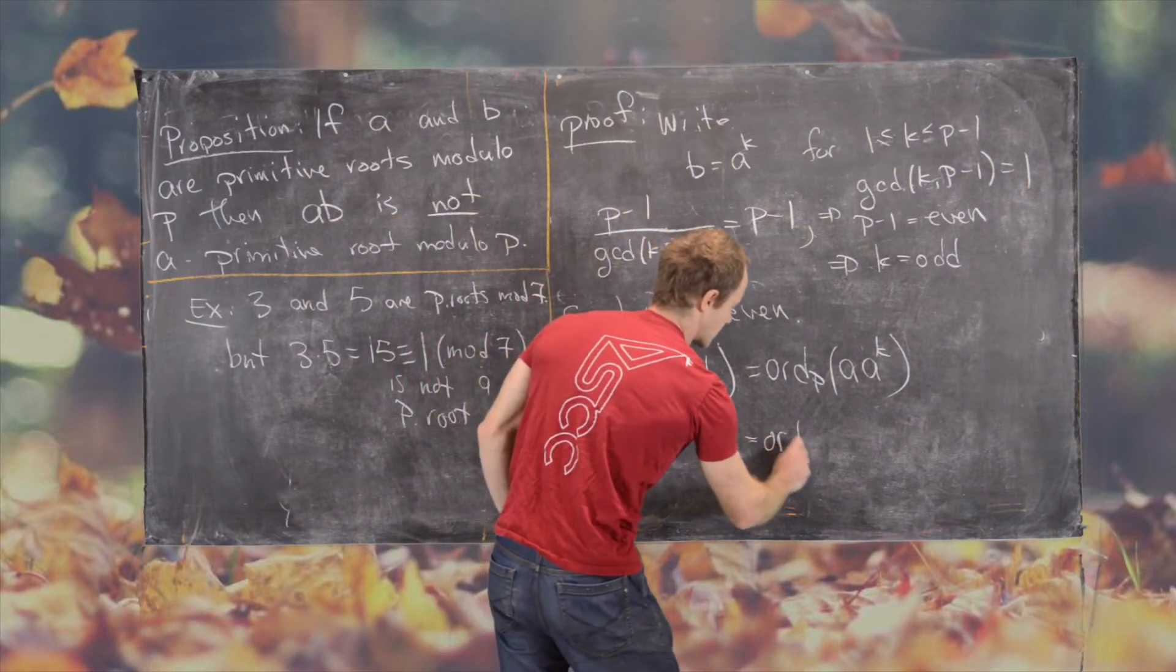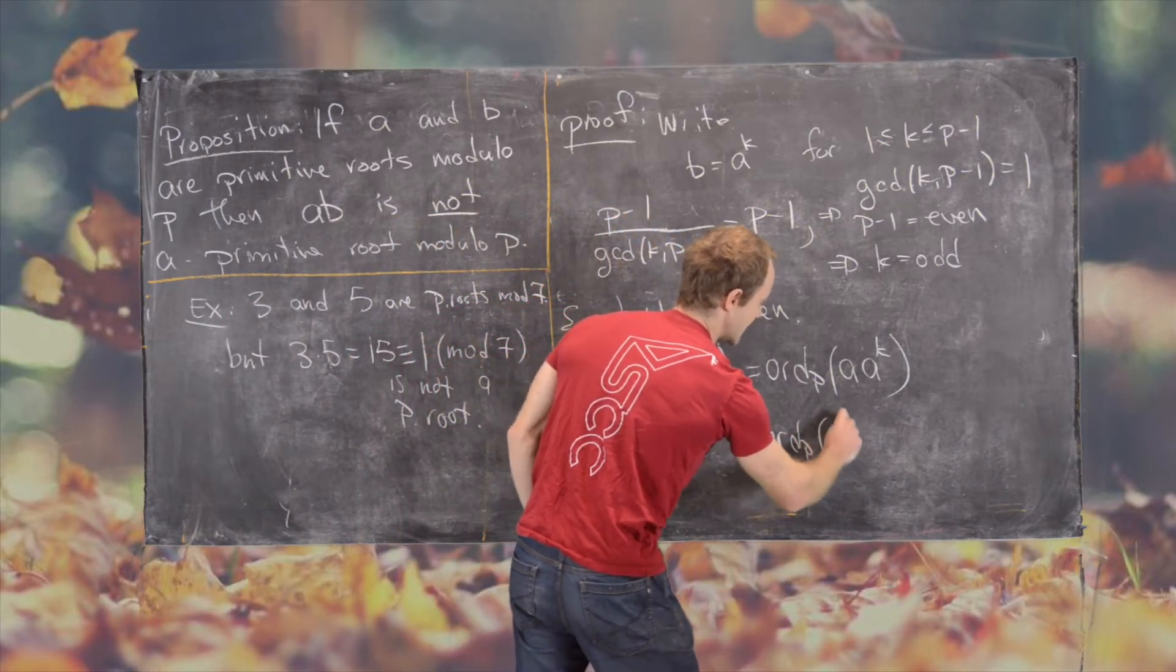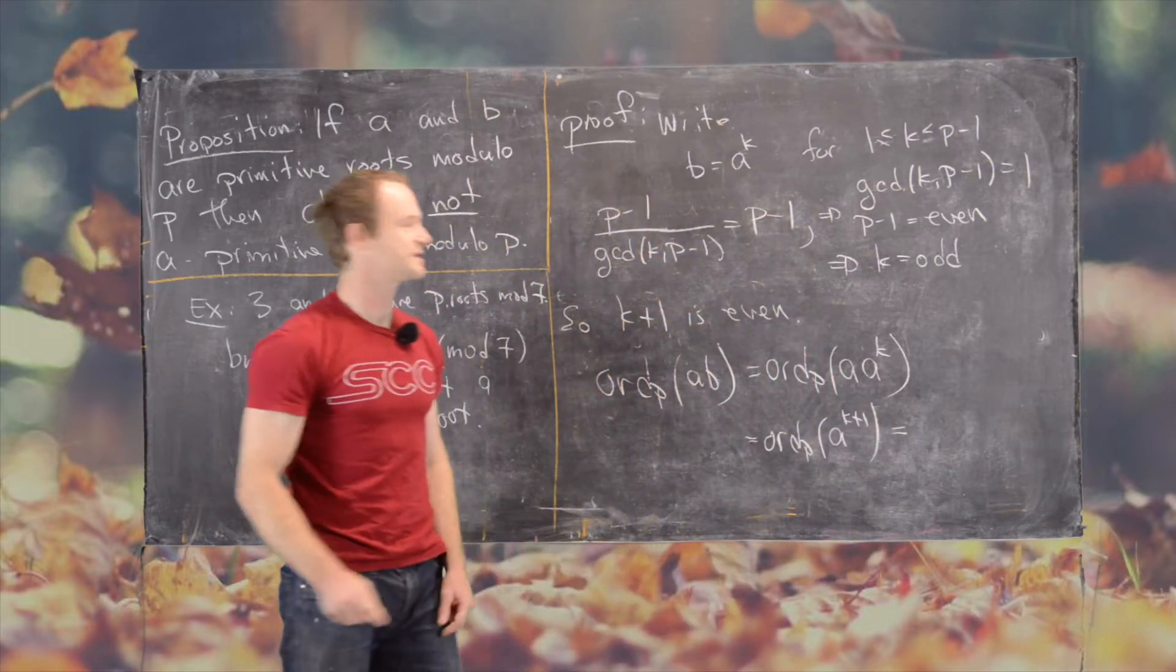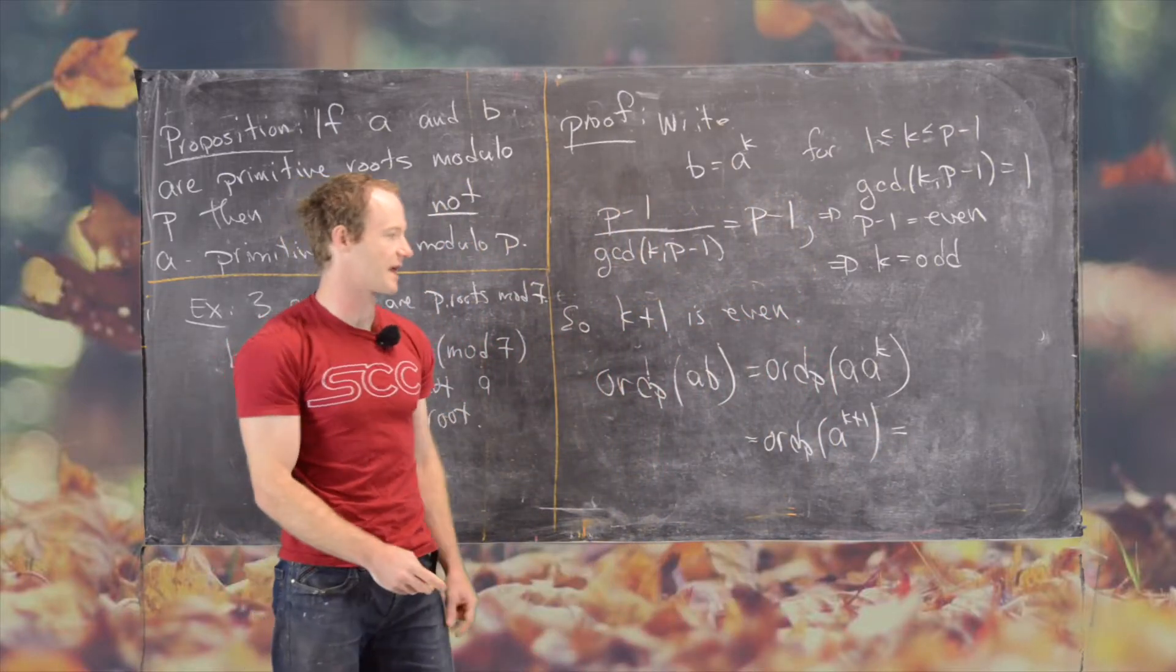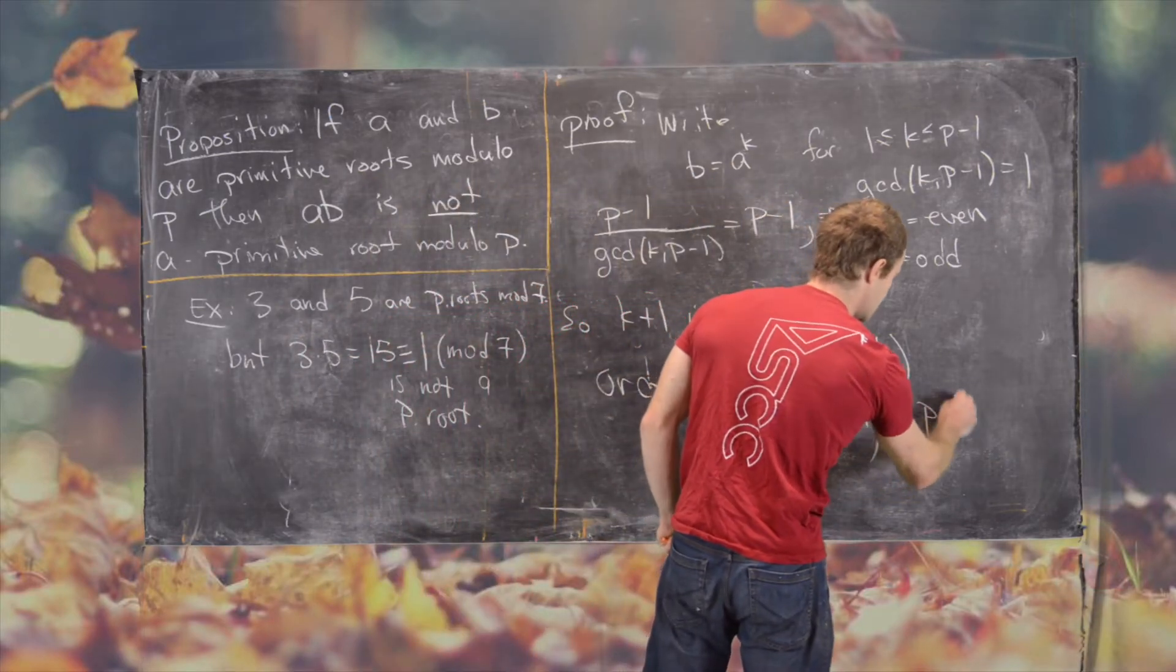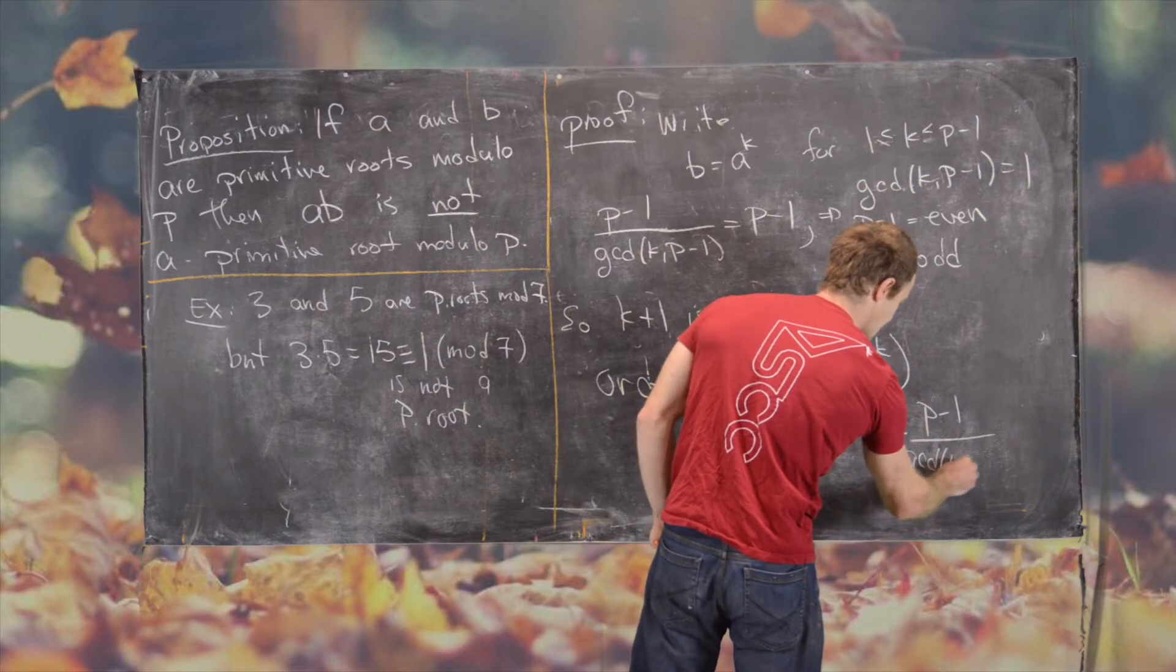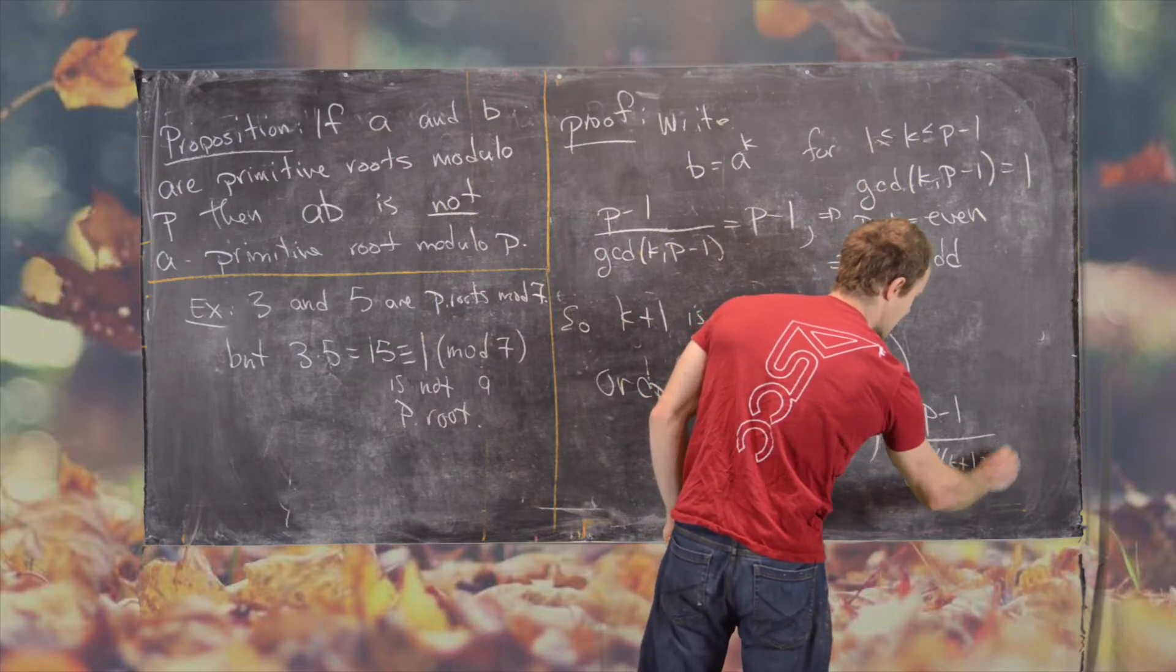But that's equal to the order modulo P of A to the K plus 1, which is equal to, and we're going to use this same formula again, so I won't write out all the details. So this is equal to P minus 1 over the GCD of K plus 1 and P minus 1.